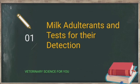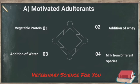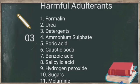The adulterants are categorized as edible adulterants and harmful adulterants. Edible adulterants include vegetable protein, addition of whey, addition of water, and milk from different species. Harmful adulterants include formalin, urea, detergents, ammonium sulfate, boric acid, caustic soda, benzoic acid, salicylic acid, hydrogen peroxide, sugar, and melamine.